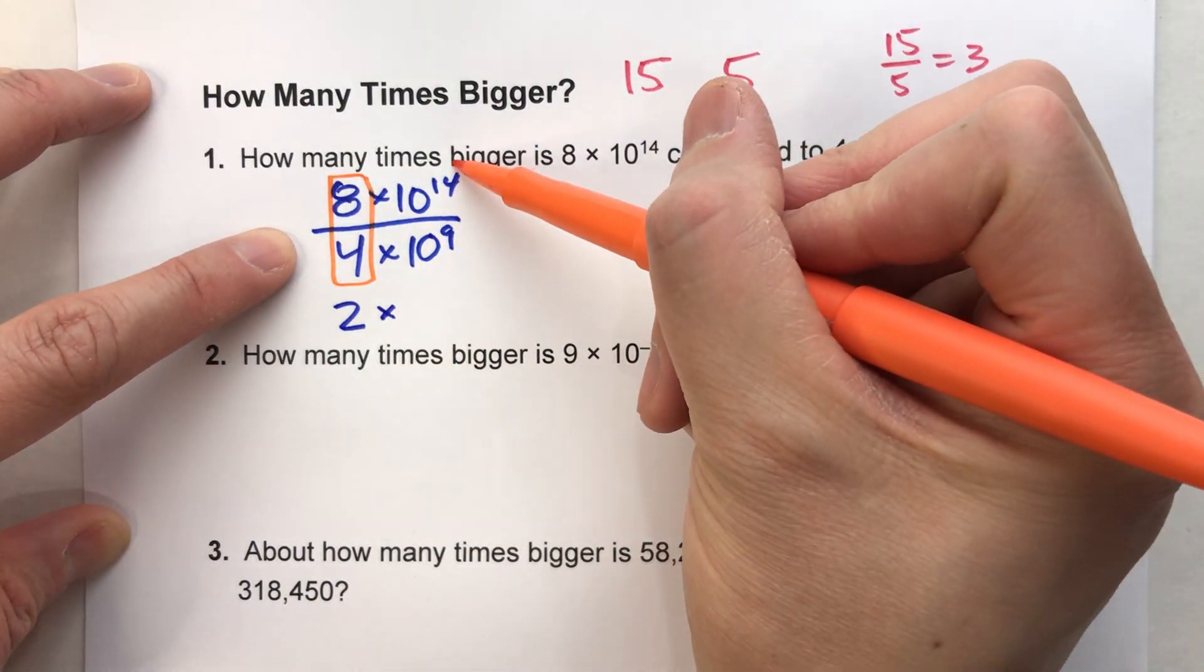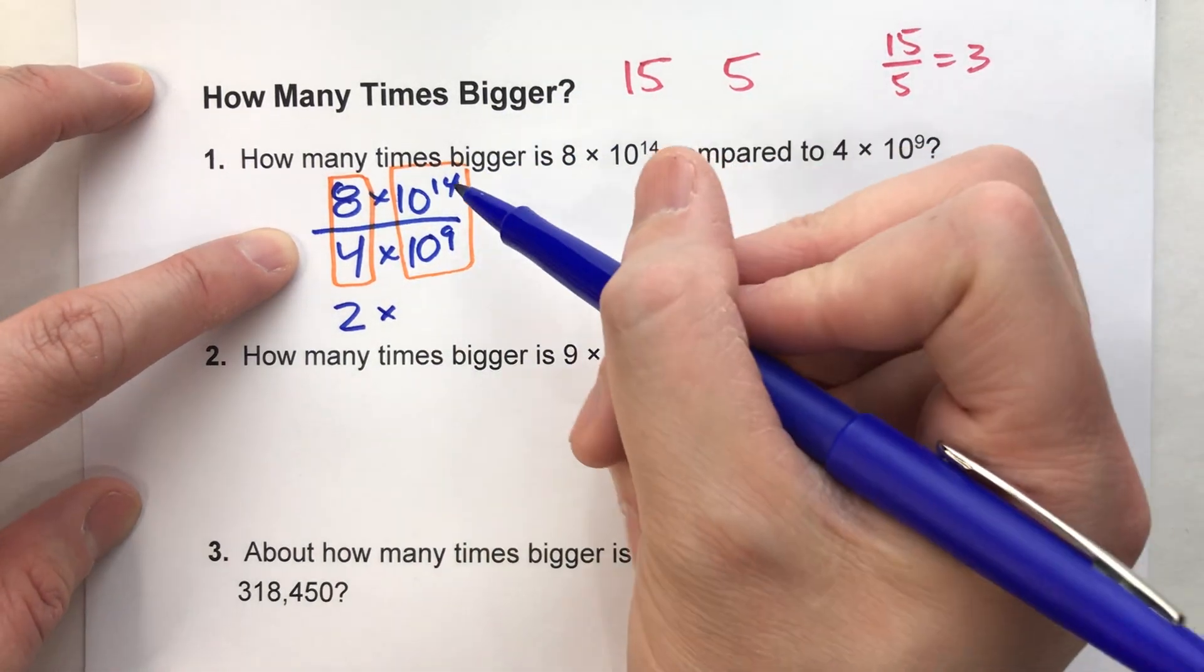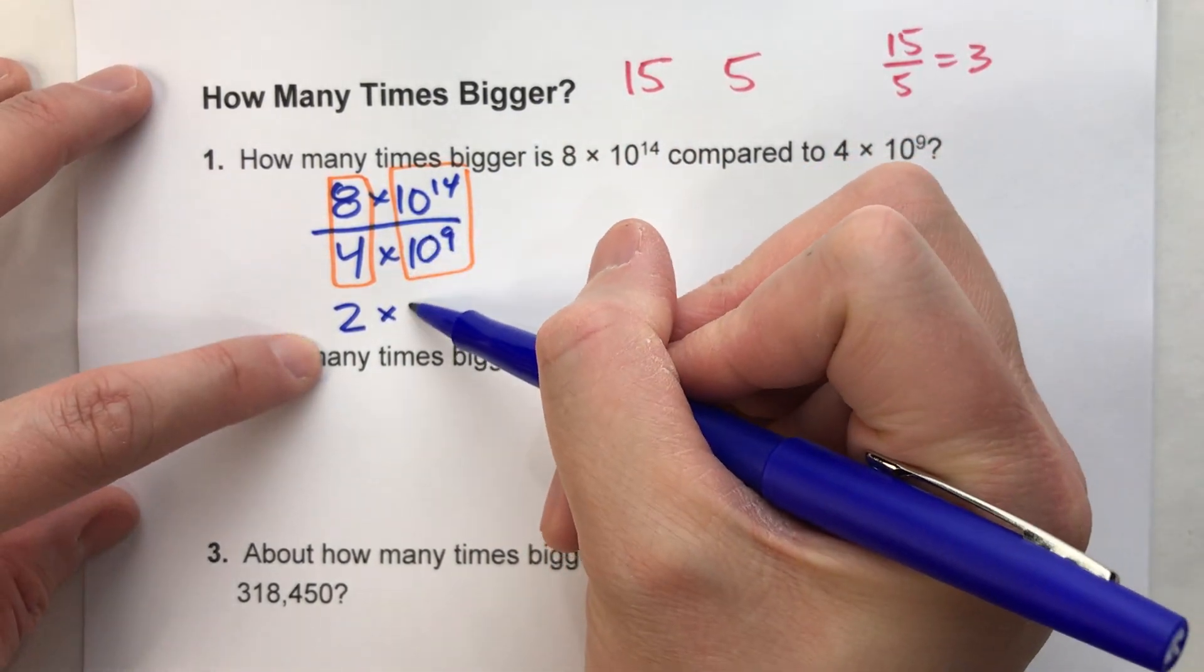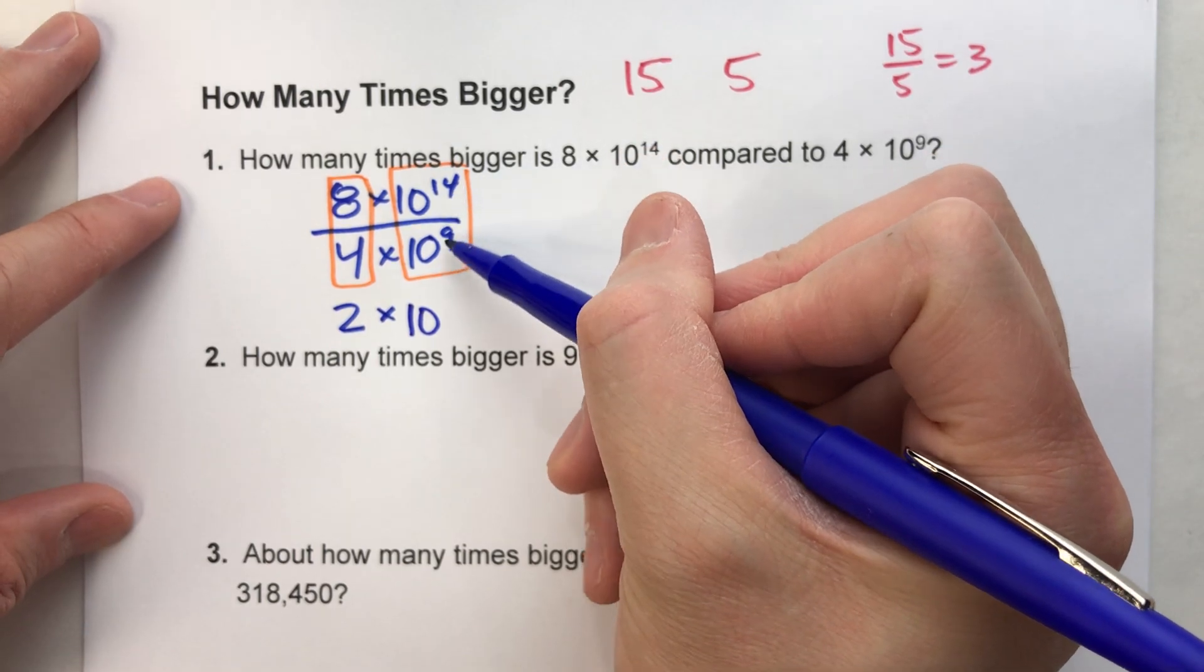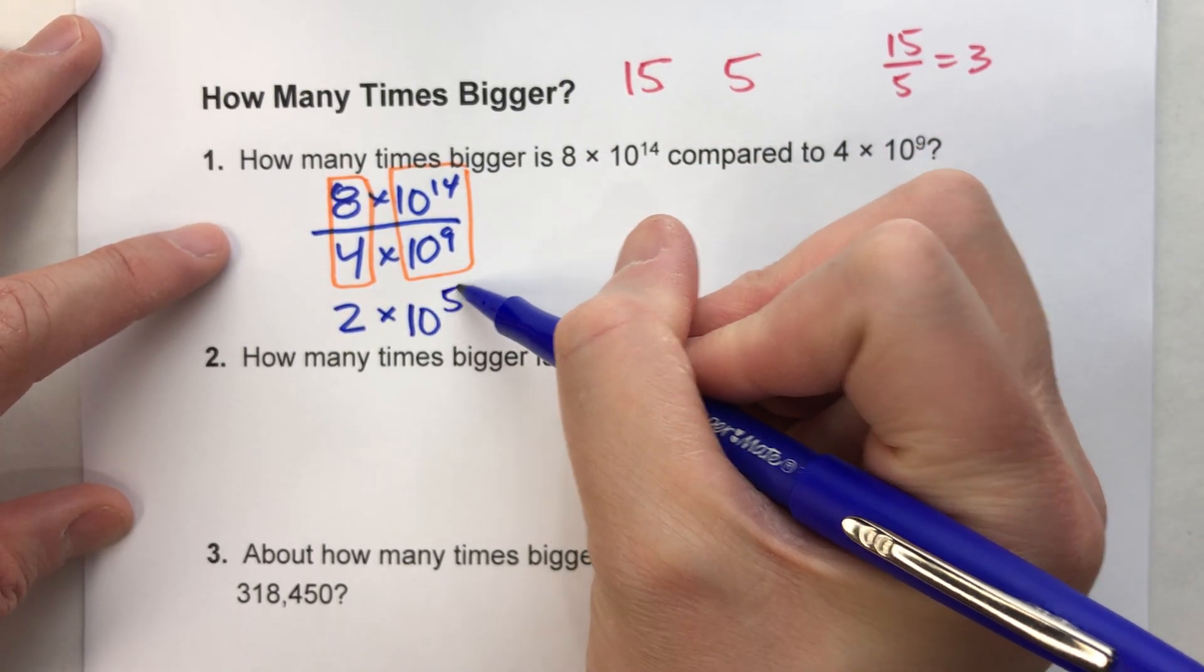Now let's divide our powers. Now we have to divide the powers using power rules. The power rules say when you divide powers with the same base, you keep the base, and we subtract the exponents. 14 minus 9, 5.